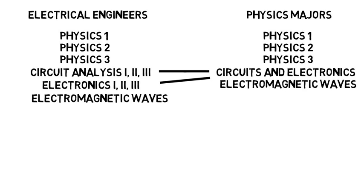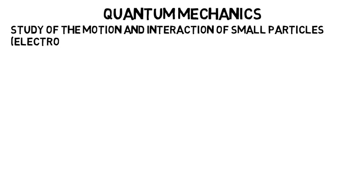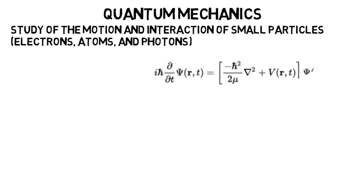Now let's look at the differences which may help you lean towards one or the other. Physics majors go on to learn quantum mechanics, and this is the study of the motion and interaction of small particles like electrons, atoms, and even photons or light. And no, it's not like chemistry. This is a tough and very math-intensive field. You'll see the equations that represent how small particles move, and as you can see it's completely different than F equals MA that you're used to.